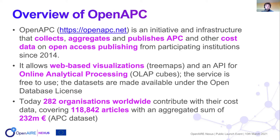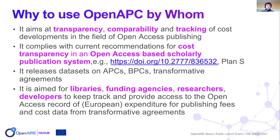The dataset on Open APC covers around 118,000 articles with an aggregate sum of publishing fees of over 232 million euros. The data is contributed from around 282 organizations, with the majority from Europe.